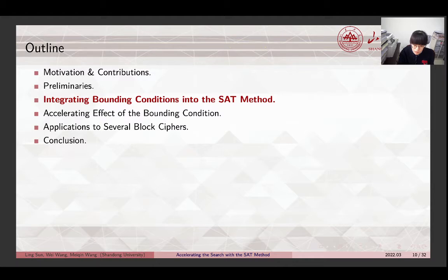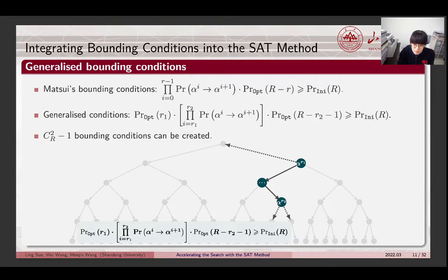Now, let's move on to the next part. Before we show how to integrate bounding conditions into the SAT method, we first note that the conditions can be generalized. Unlike the manual search, the automatic method might not initialize the search from the input of the cipher. So, for each partial trail from the R1-th round to the R2-th round, we can create a generalized bounding condition. In total, CR2-1 conditions can be constructed.